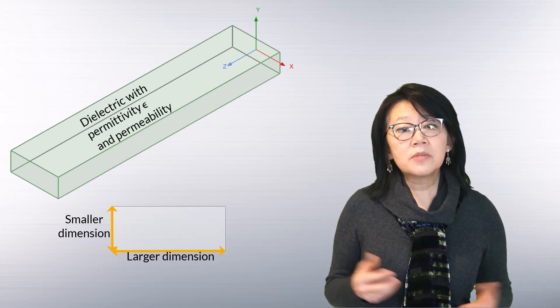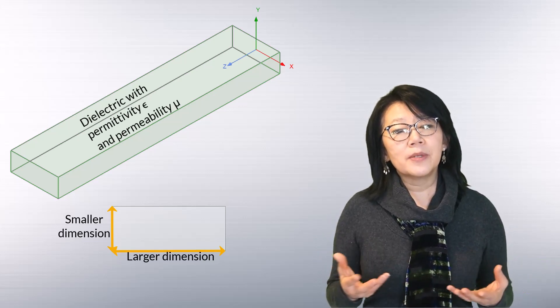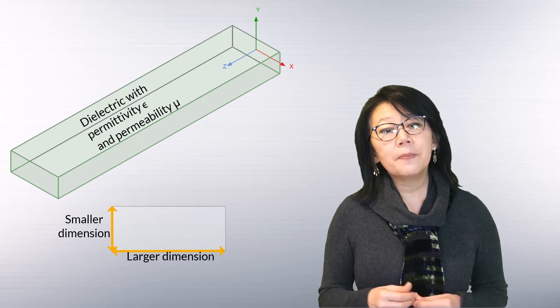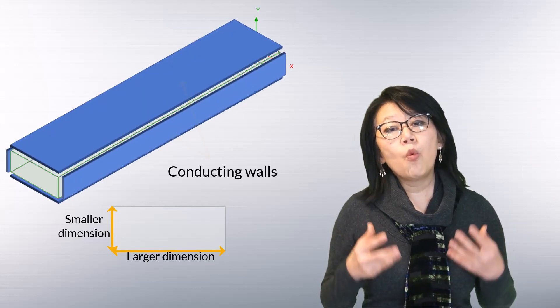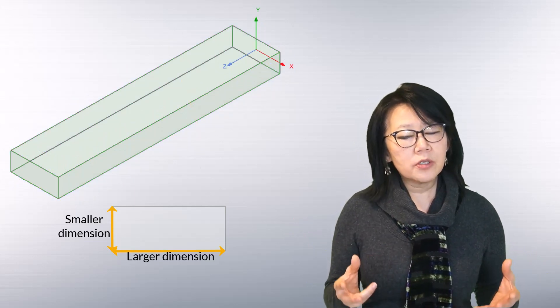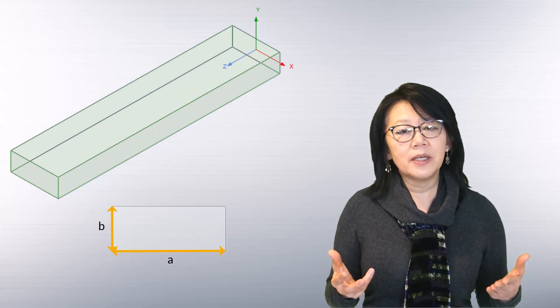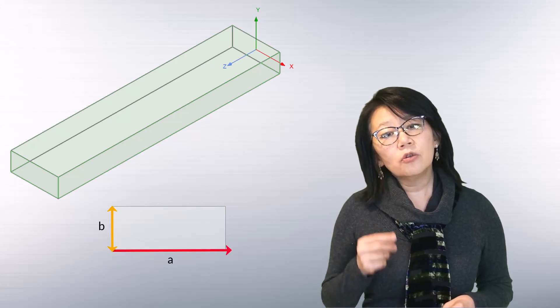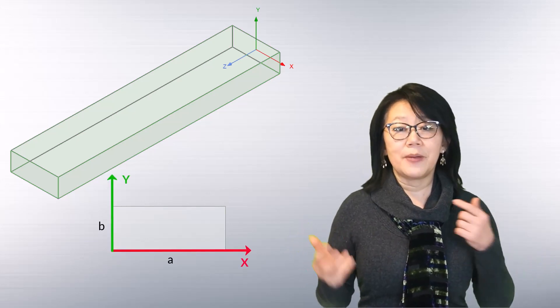A typical waveguide cavity is filled with some dielectric with a permittivity of epsilon and a permeability of mu, and the walls are made of some conducting material. The larger and smaller dimensions are labeled as a and b respectively, and they're aligned along the x and y axis respectively.